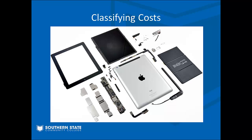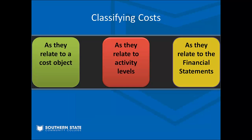Let's talk about some different cost classifications. We can have costs that relate to a cost object and classify them in that manner. We can classify costs as they relate to our activity levels — meaning how much we are producing. And we can classify costs as they relate to our financial statements. We'll spend the next few minutes breaking down how costs are classified according to those three areas.